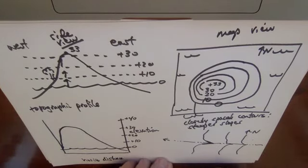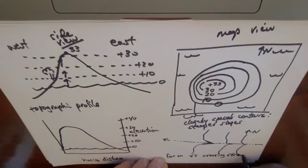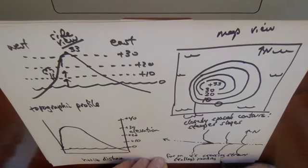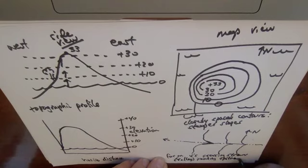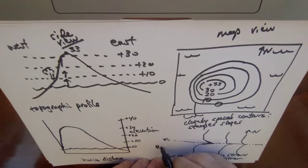The way I generally say it is that the contour lines form Vs when they cross streams, and that goes for any valley, because streams are in valleys, and the Vs point upstream. So we know that this elevation is lower than this, and this is lower than this. The stream is flowing in that direction. That is called the rule of Vs.